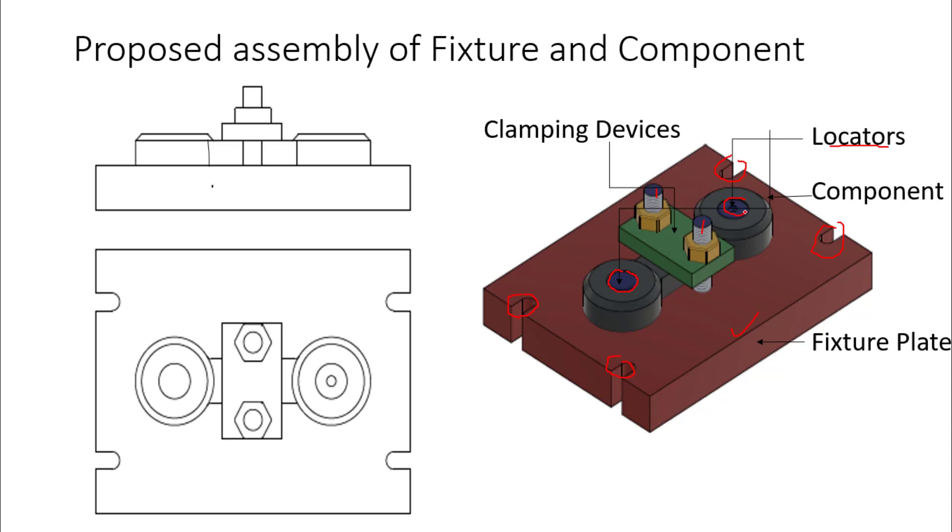Component will be aligned with this locator. After locator, after arranging the component in the assembly of fixture plate, we will put one strap and a nut to clamp the component with the fixture body. So here I have proposed an assembly of fixture and component. Now we can design one by one component.